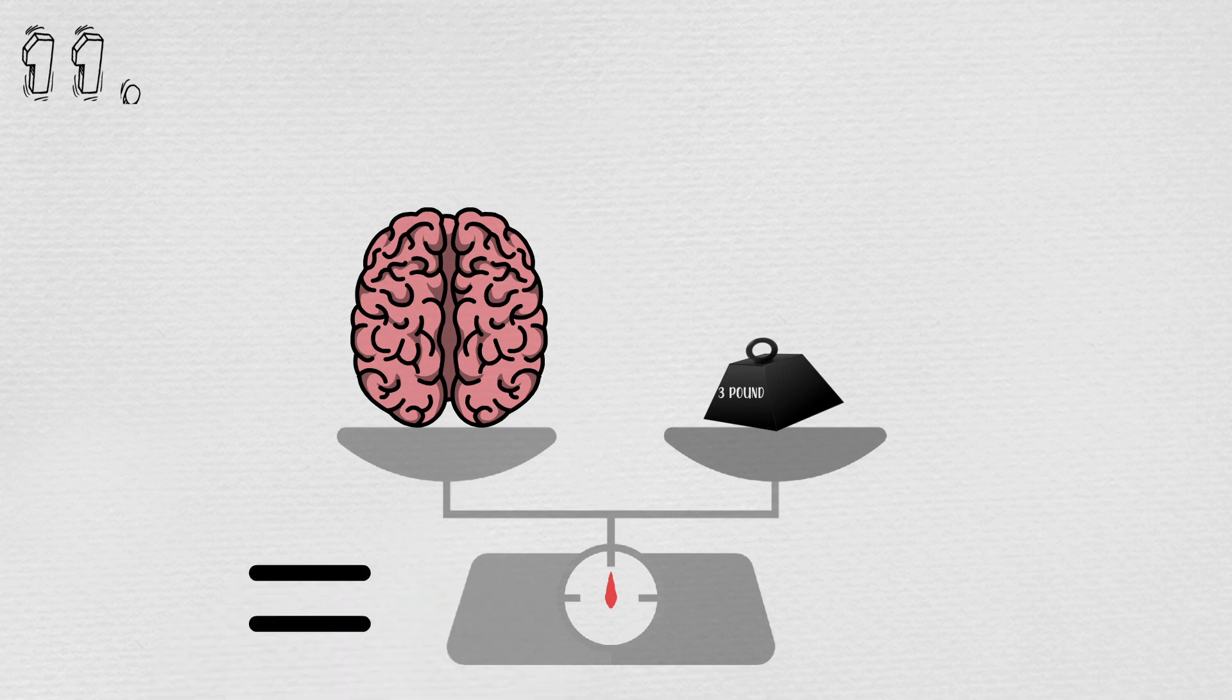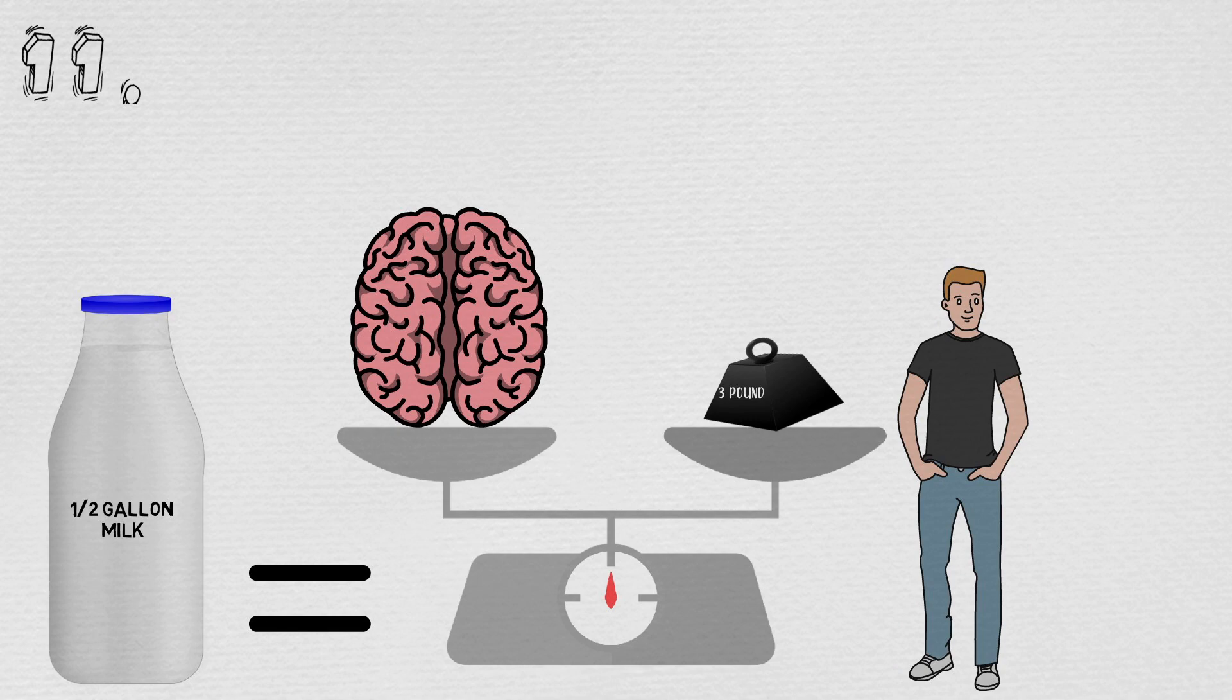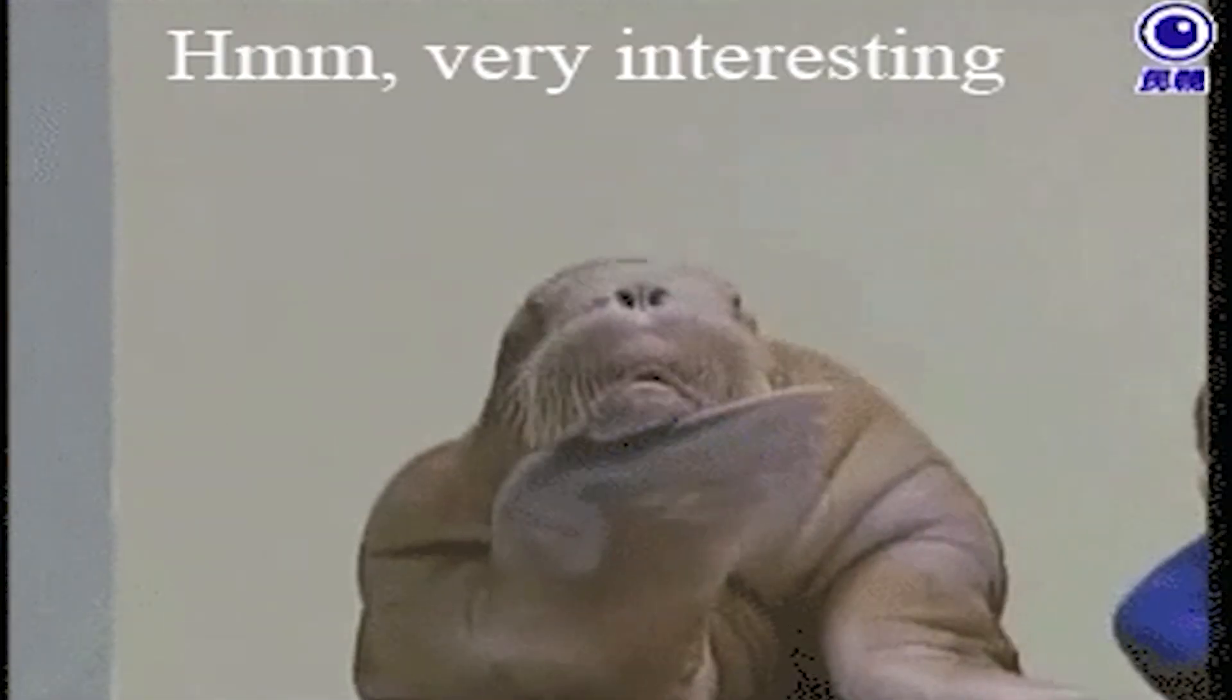Number eleven: Ek human brain ka weight three pounds hota hai which is equal to half gallon of milk. However, male or female ka brain size alag-alag hota hai. Quite interesting, huh?